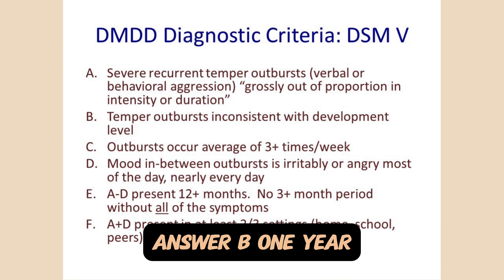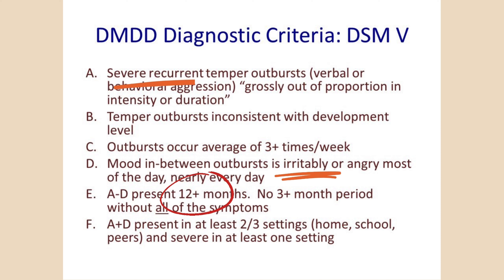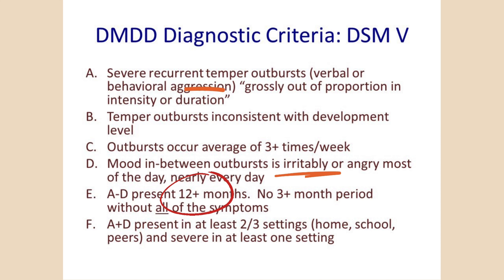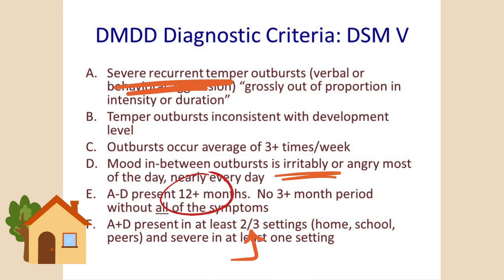Answer: B. 1 year. For diagnosing DMDD according to DSM-5, the symptoms of severe temper outbursts and persistent irritability must be present continuously for a minimum duration of 1 year. Also, symptoms must be present within at least two settings such as the home and school.